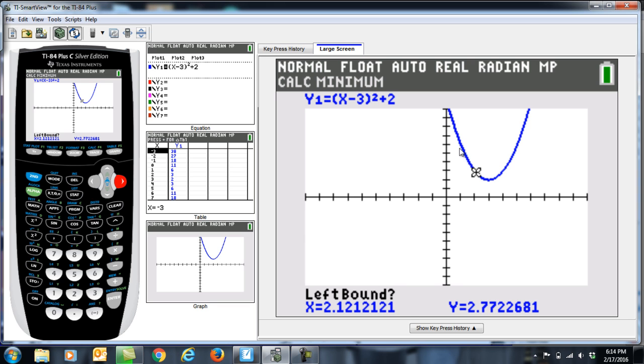When I do, it puts an arrow up here and draws a line. Now it asks for the right bound. We've got to mark the right-hand side, so we're going to hit our right arrow until we move that cursor over to the right-hand side of our vertex. Not too close, but not too far away. Then we're going to hit enter one more time.